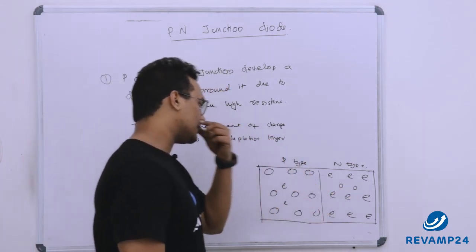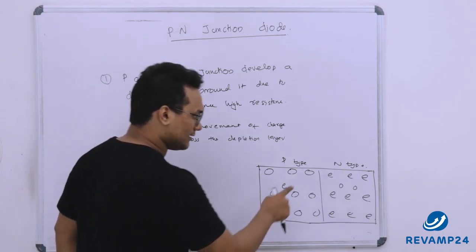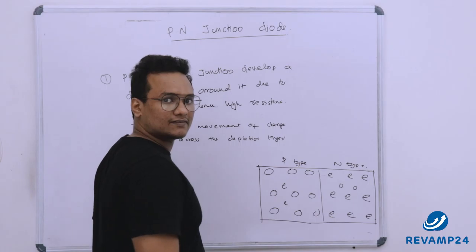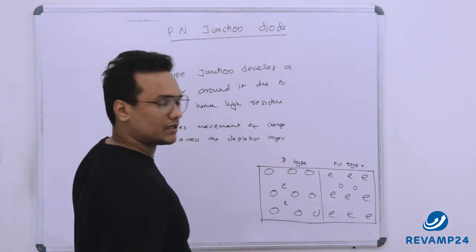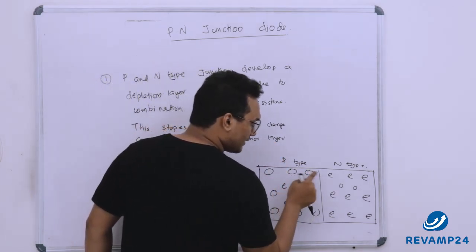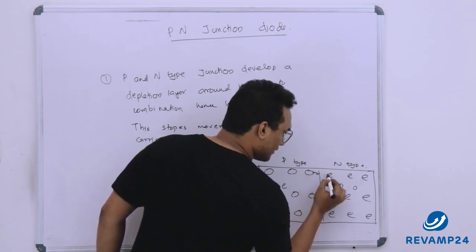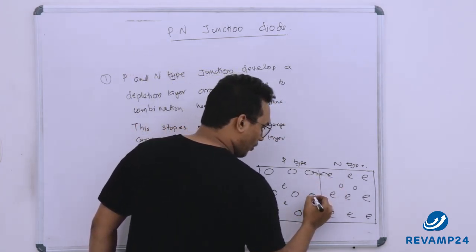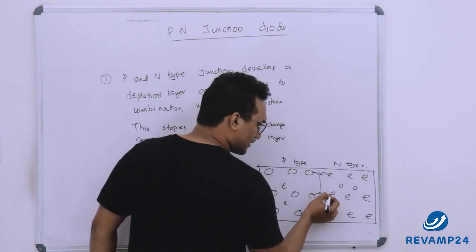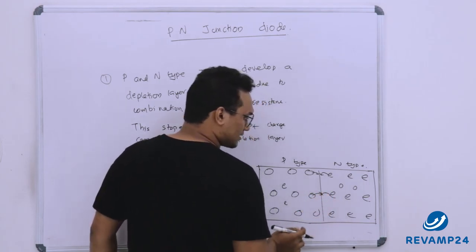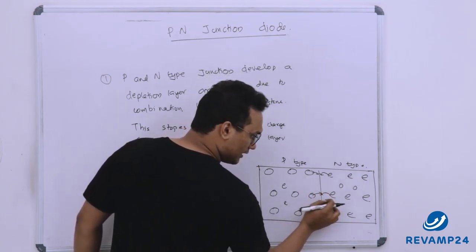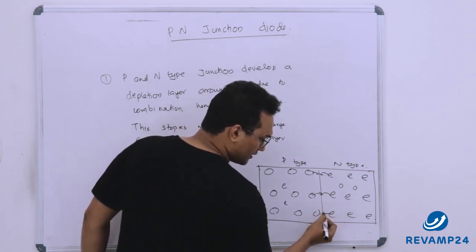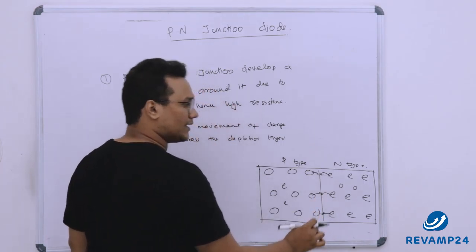But when we connect them, what will happen? These are holes — positive charge — and these are electrons — negative charge. So they will attract each other and come to the junction, then recombine. Diffusion will happen. Holes will come to the junction and electrons will come to the junction due to the attraction between electron-hole pairs, and they will combine at the junction.